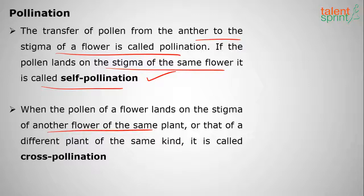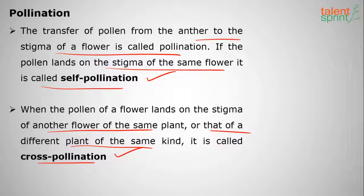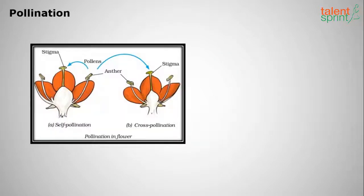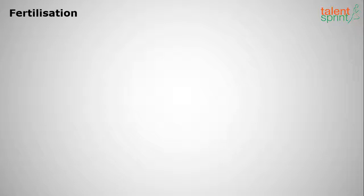If pollen lands on the stigma of another flower of the same plant, or of a different plant, it is called cross-pollination. To summarize: the transfer of pollen from the anther to the stigma of a flower is called pollination. You can see both self-pollination and cross-pollination illustrated in the diagram.